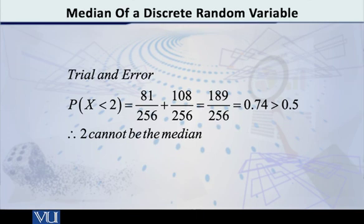So how much is that equal to? It is equal to 0.74. Students, 0.74 is not less than or equal to half, so therefore, now I don't even have to look at the other one and I can say to myself very quickly that 2 is not the median of this distribution.